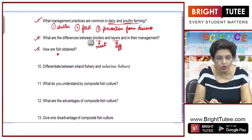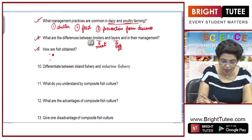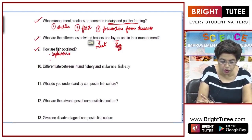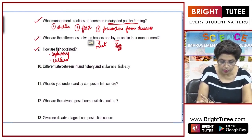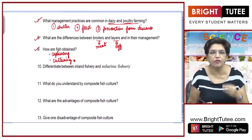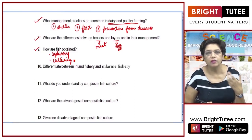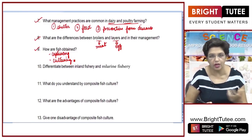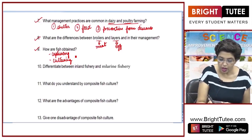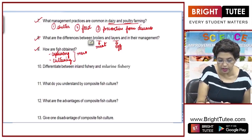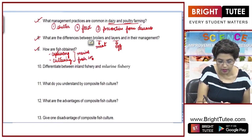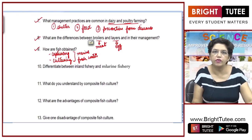Next question: how are fish obtained? Fish can be obtained by two methods. First is by capturing, which is called capture fishing. Second is by culture — you put fish seeds into ponds and when the fish breed and reproduce, you catch them. Both methods can be done either in marine resources or in freshwater resources like rivers or ponds.